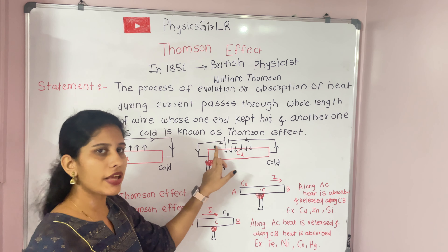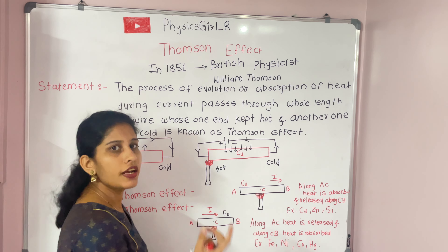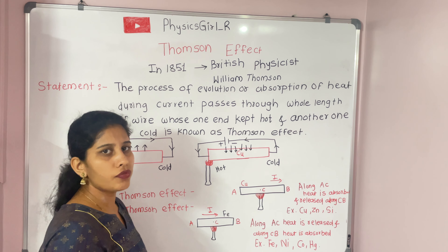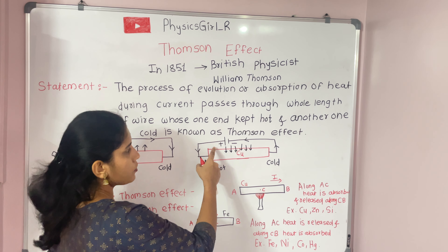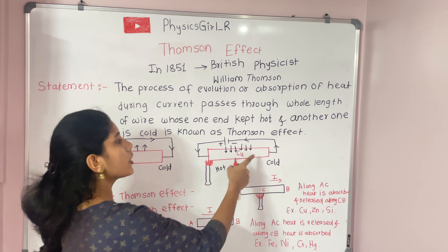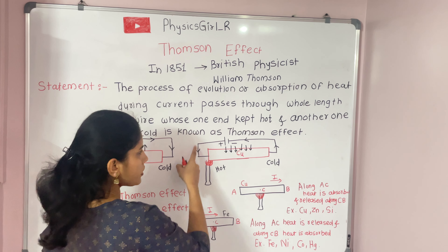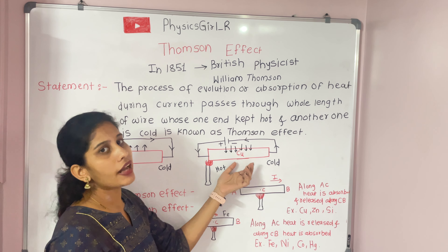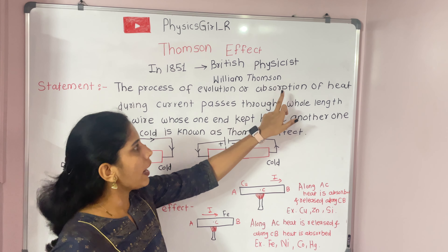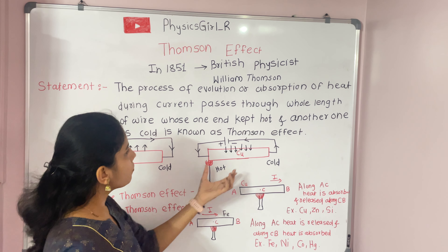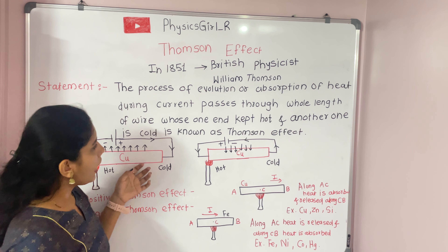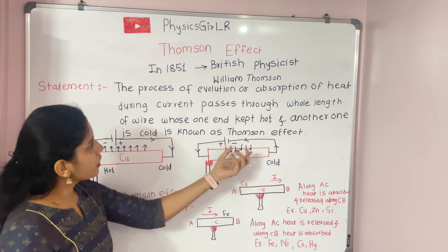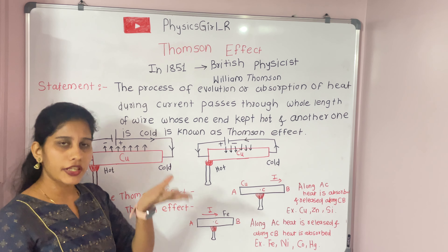Now we change the polarity of the battery — connecting positive and negative terminals in reverse. Again, electrons flow from higher potential to lower potential, so the direction of current is now reversed. In this case, if we change the polarity, the heat is absorbed by the current-carrying copper wire. So there are two possibilities: first is evolution and second is absorption of heat.